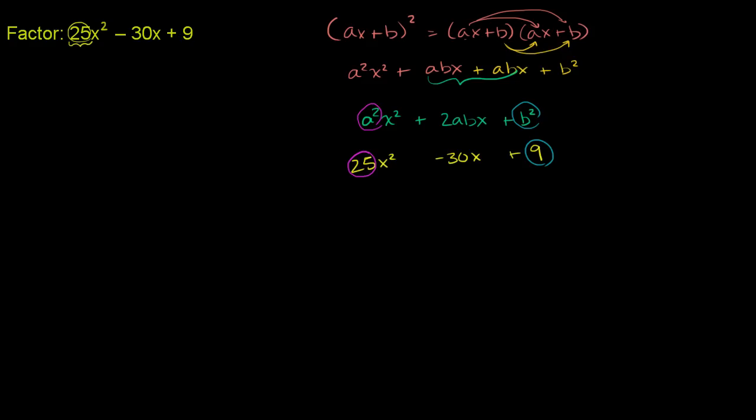So that tells us that a could be plus or minus 5, and that b could be plus or minus 3. Now, let's see if this gels with this middle term. For this middle term to work out,